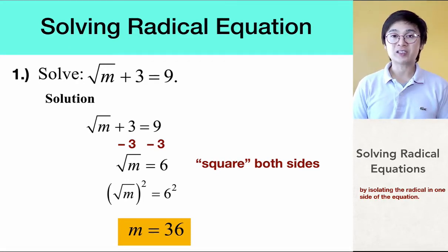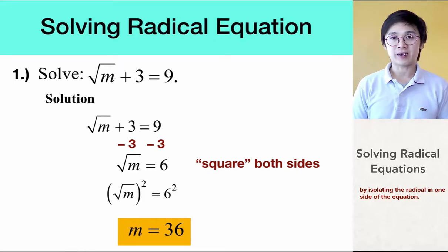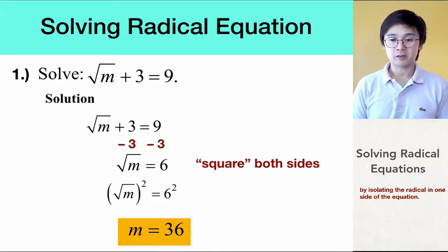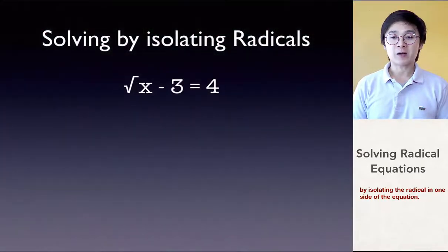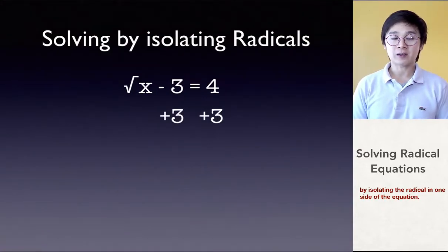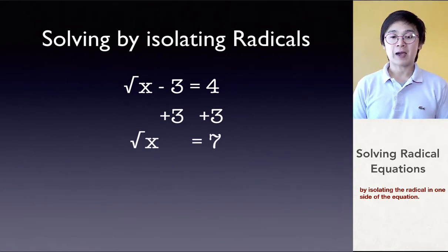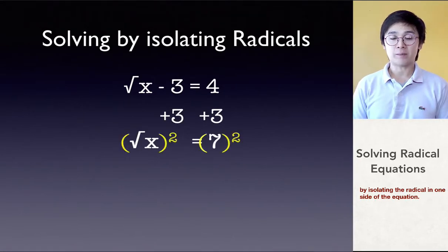We need to first isolate the radical symbol or the radical expression by adding, subtracting, or dividing the constants around the square root to start your process in solving for the variable. Now, let's take a look at square root of x minus 3 is equal to 4, which is quite similar to the first example. So, all we have to do is to isolate the square root of x by adding 3 on both sides. Since the square root of x is now isolated, the only thing left to do is to square both sides.